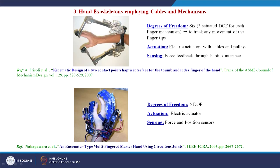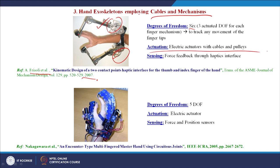Coming to the third and final classification — hand exoskeletons employing both cables and mechanisms — the first is the model proposed by Frisoli et al. in 2007. It has 6 degrees of freedom to track any movement of the fingertips: 3 for the index finger and 3 for the thumb. This mechanism can track any trajectory traced by these 2 fingertips. Actuation is by electric actuators with cables and pulleys, and sensing is done with force feedback through a haptic interface.